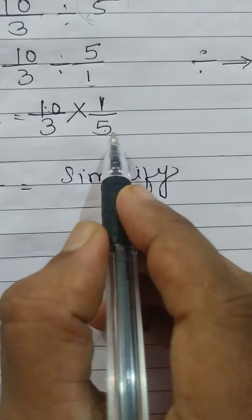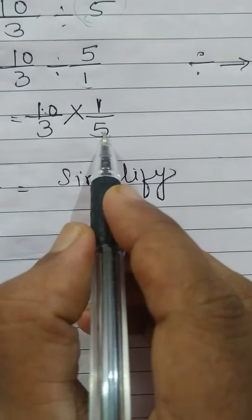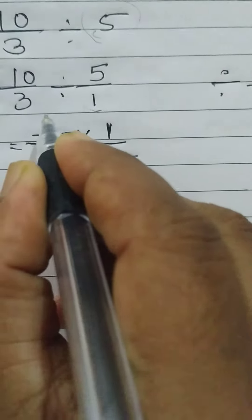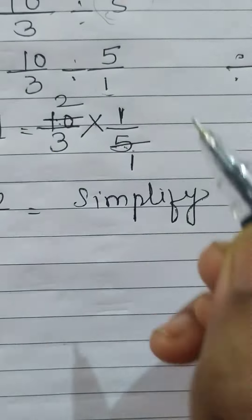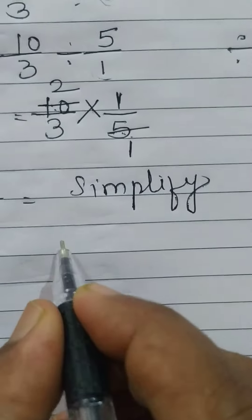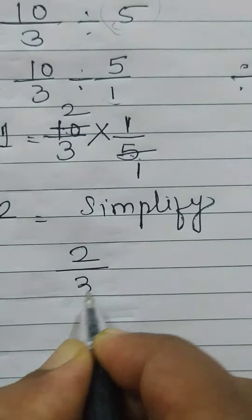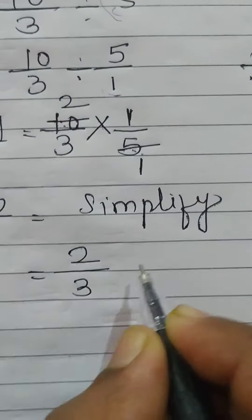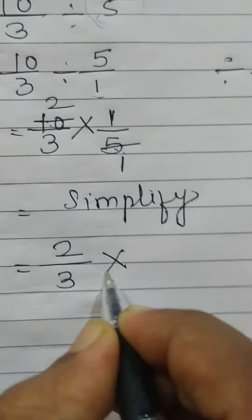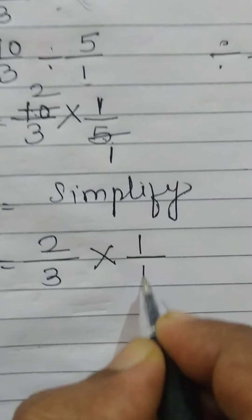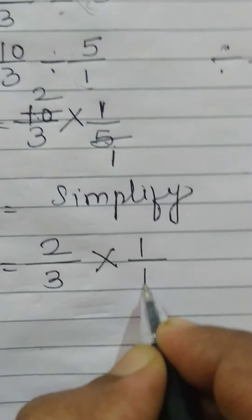Here, 10 and 5 are both divided by the same number, 5. Five ones are 5, five twos are 10. What remains is 2/3 multiplied by 1/1.